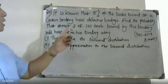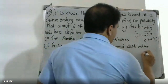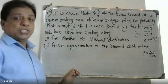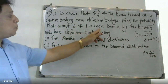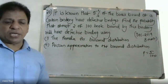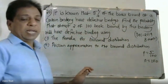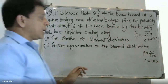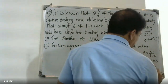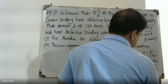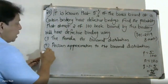Five percent of the books bound at a certain bindery have defective binding. So p is equal to five by one hundred, that is 0.05. And q is equal to one minus five by one hundred, that is ninety-five by one hundred, which is 0.95.